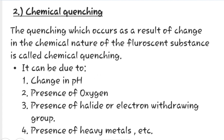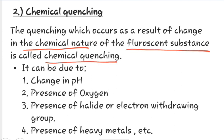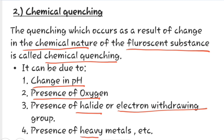Now let us see what is chemical quenching. The quenching which occurs as a result of a change in the chemical nature of the fluorescent substance is called chemical quenching. It can be due to change in pH, presence of oxygen, presence of halide or electron withdrawing groups, or presence of heavy metals.